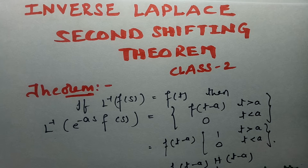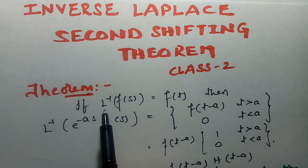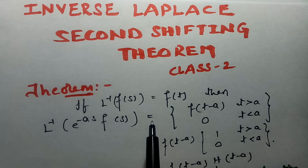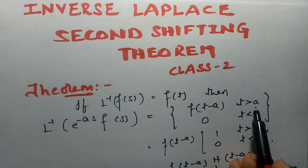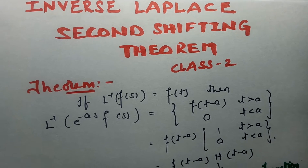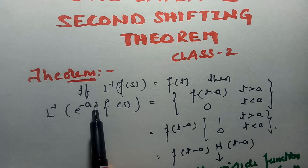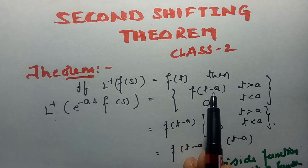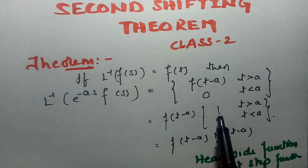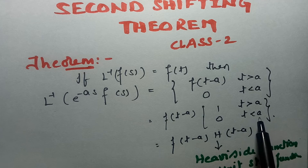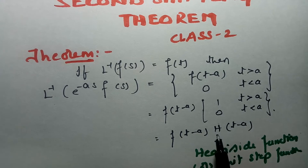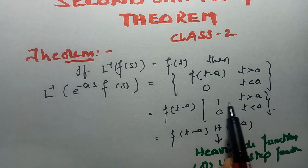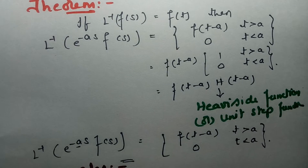First of all I would like to state the second shifting theorem. If the inverse Laplace transform of F(s) equals f(t) in general, then the inverse Laplace transform of e^(-as)·F(s) equals f(t-a) for t greater than a, and 0 if t less than a. This bracketed expression — 1 if t greater than a, 0 if t less than a — is nothing but the unit step function or Heaviside function, written as h(t-a). This is the second shifting theorem.